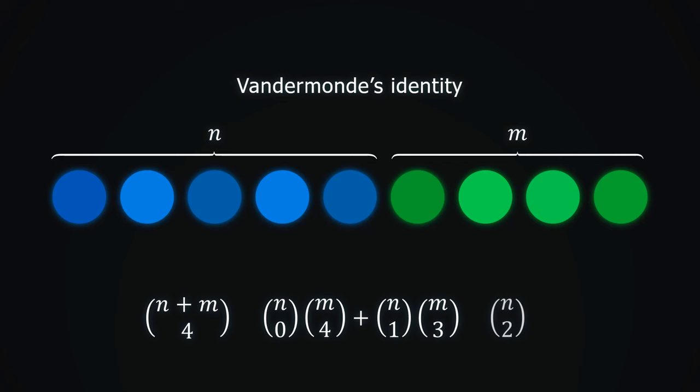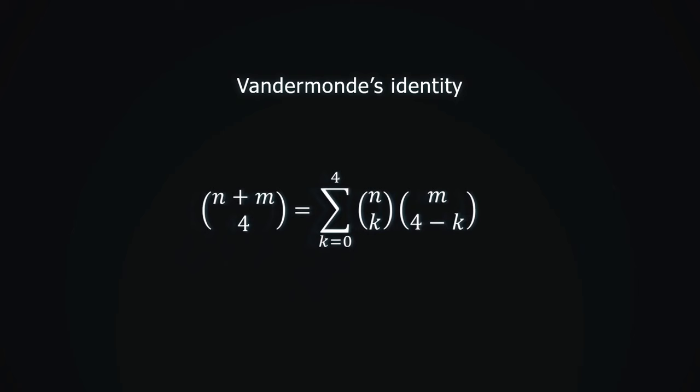Then if we take 2 blue objects, we have n choose 2 times m choose 2 ways to do this. The pattern continues until we take all 4 blue objects and no green ones. We can condense this using the sum notation.